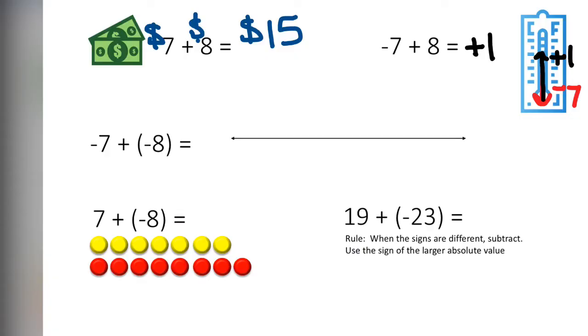Now we have another number line. We're going to start at 0. And we're going to go back to negative 7. And then we need to go back another negative 8. Here again, the signs are the same. So we have to add the numbers together. So in this case, we have gone back 15 spaces.